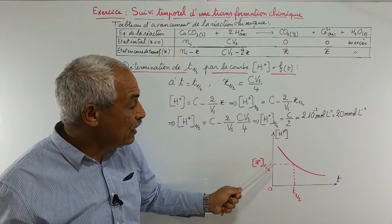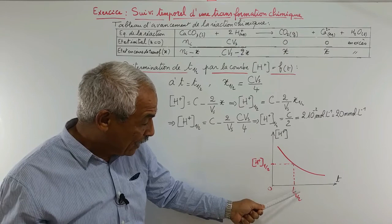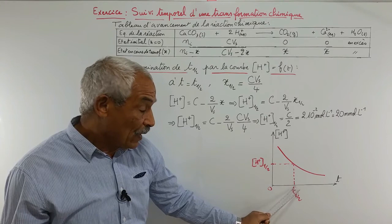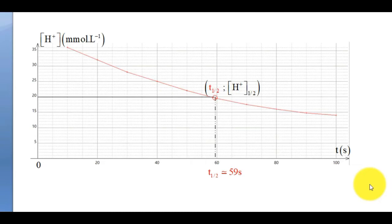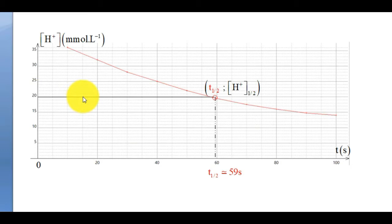Sachant que [H+] à T1/2 est égale à 20 mmol·L⁻¹, c'est l'ordonnée du point d'abscisse T1/2 sur la courbe [H+] en fonction du temps. Je prends le point d'ordonnée 20 mmol·L⁻¹ sur la courbe rouge représentative de [H+] en fonction du temps. Ce point est d'abscisse T1/2, et la lecture donne approximativement T1/2 ≈ 59 secondes.